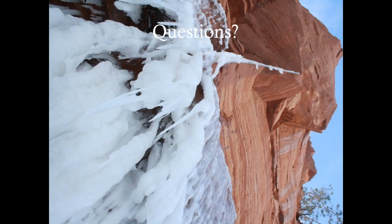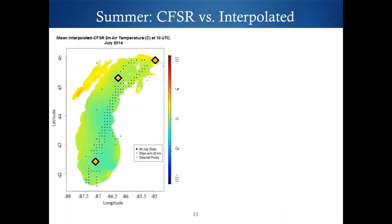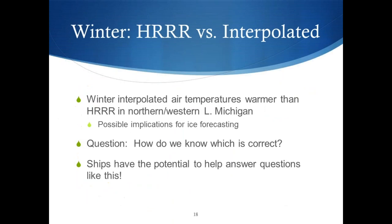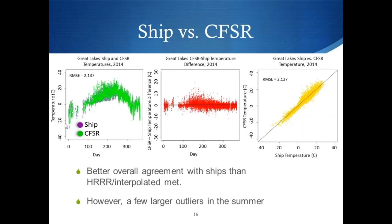Regarding the outliers in CFSR: part of it might be that there's just more ship data in the summer, so overall you have more points and a wider spread because you have more points to look at. And with CFSR, its resolution is somewhat more coarse, so it's possible you could get some points that are really different along the edges of the lake.